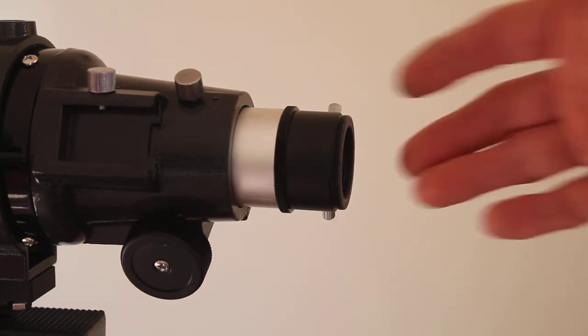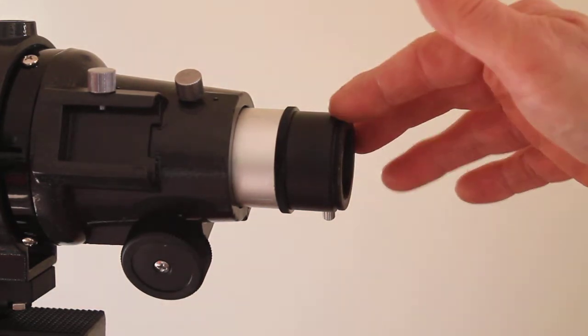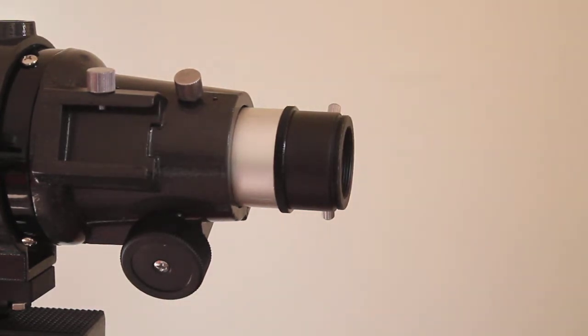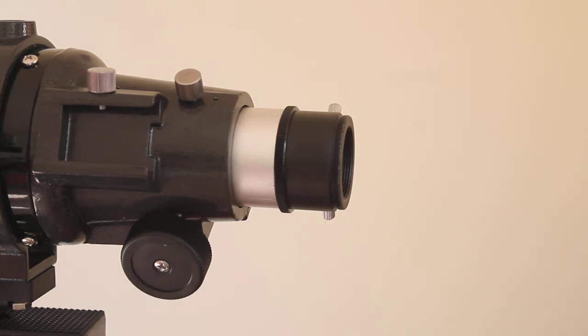By prime focus, there is no diagonal or eyepiece used, so this becomes a 400mm f5 telephoto lens. This is fantastic on a driven mount for wide field imaging of the night sky, but you can also use it on distant terrestrial subjects or even ships at sea.